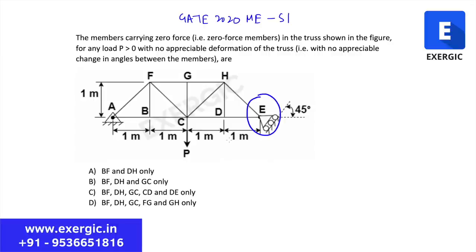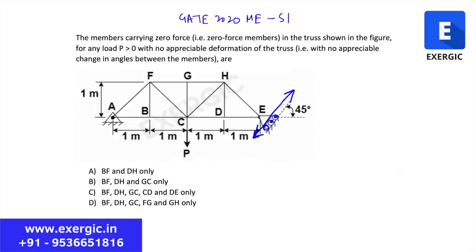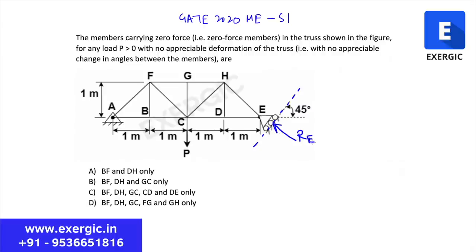Now look at the geometry. DH = 1 meter and DE = 1 meter, and they are perpendicular to each other. In the right triangle HDE, since both legs are equal, both angles are 45 degrees. Looking at the straight line, if this angle is 45° and the support is also at 45°, then the angle between EH and the support direction is 90°. This means link EH is perpendicular to the support, and since RE is also perpendicular to the support, RE is collinear with EH.